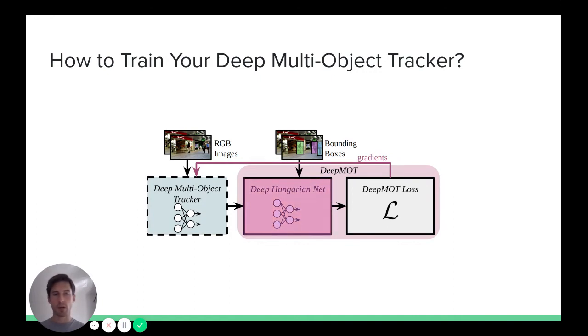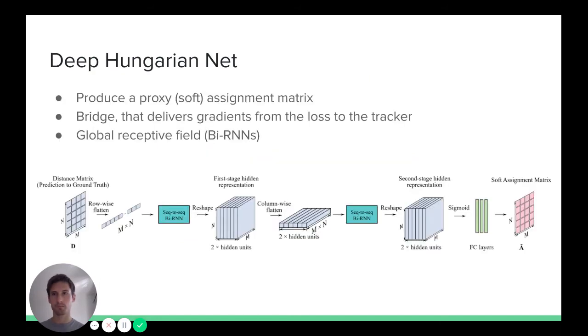First let's have a look at how exactly this DHN module works. What is important here is that DHN must be able to accept matrices of varying sizes. This is because we have a varying number of tracks and ground truth objects from frame to frame. At the same time, the output matrix produced by this network has to have the same dimensionality as the input matrix. Because we are here talking about establishing distances and matches between the same number of objects.